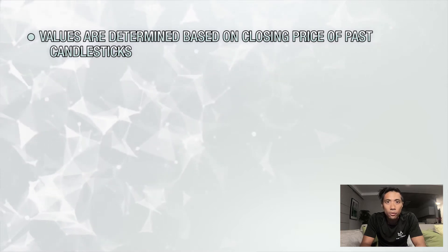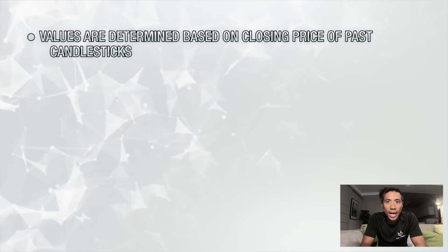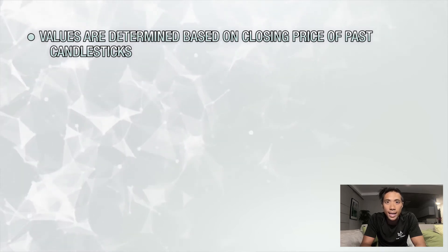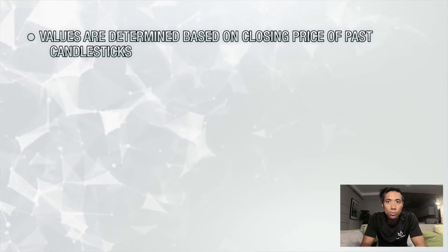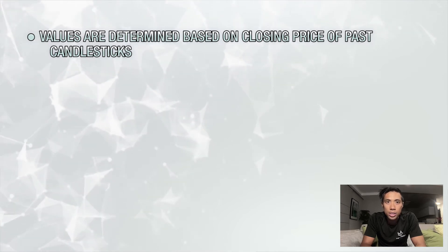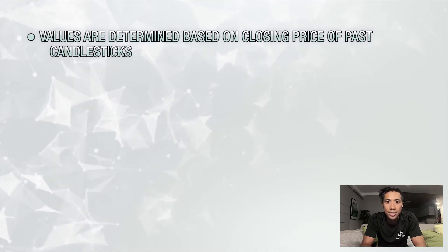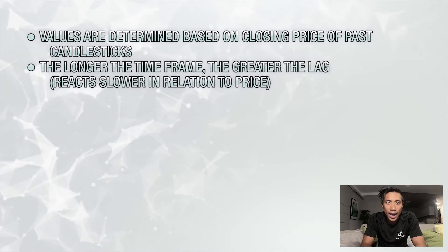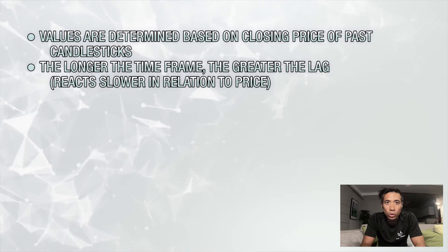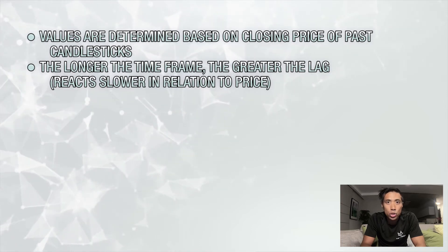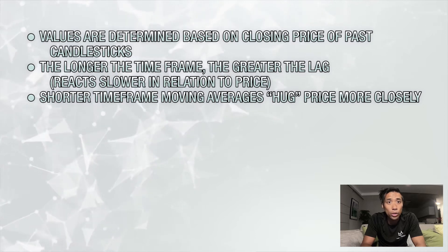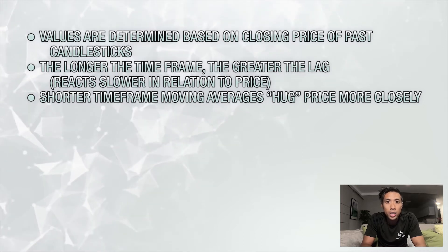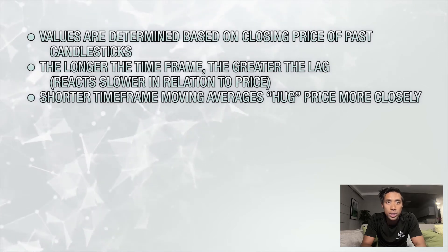A 10-day MA, for example, is a simple moving average calculated based on the closing price of the past 10 days, while a 26-day EMA is an exponential moving average whose calculations are based on the closing price of the past 26 days. The longer the timeframe you select on your moving average, the greater the lag, meaning the slower it'll react in relation to price. So you'll find that shorter timeframes such as an 8-day EMA or a 13-day MA react much faster and can be seen as hugging the price more closely on the graph.